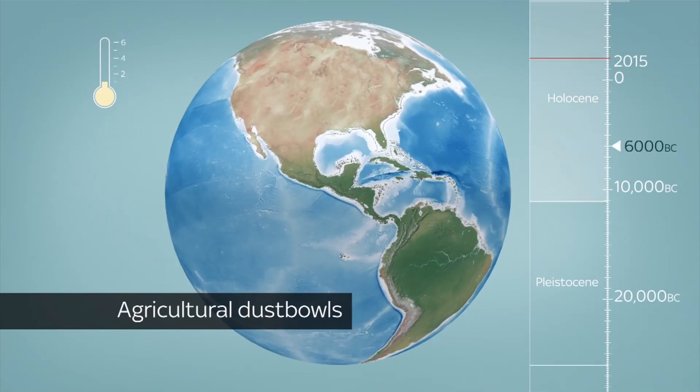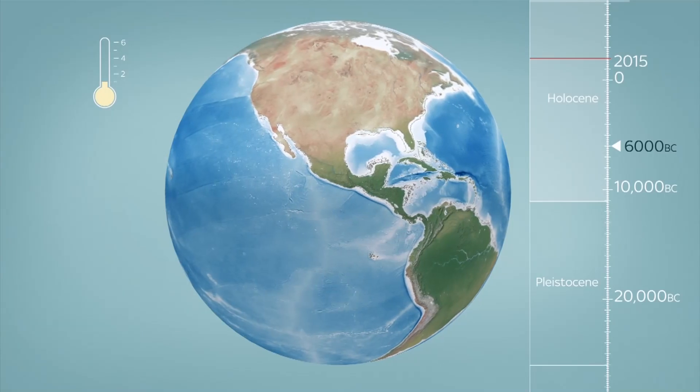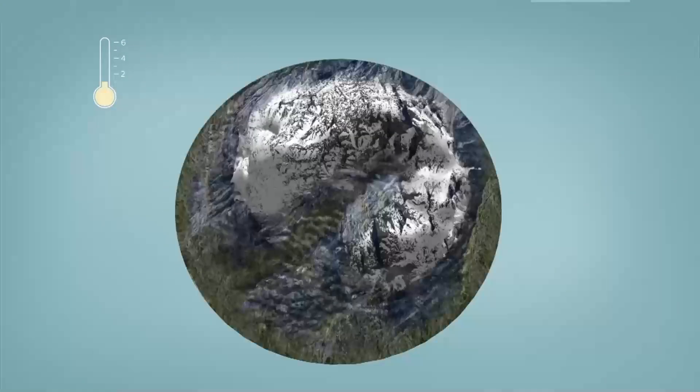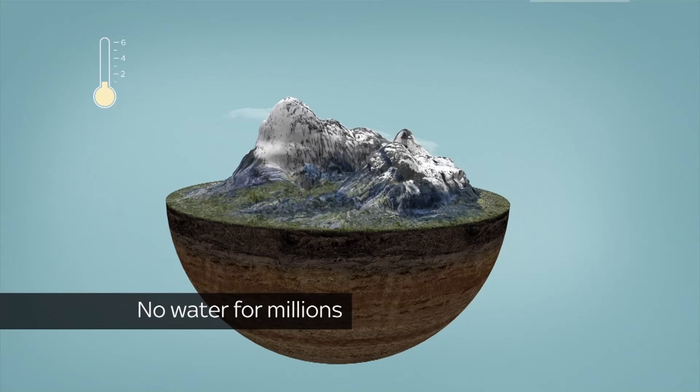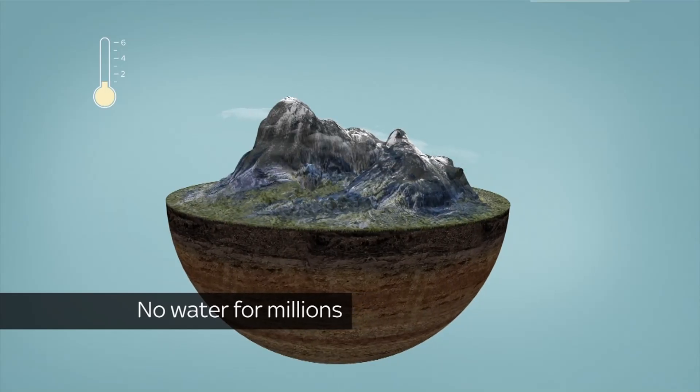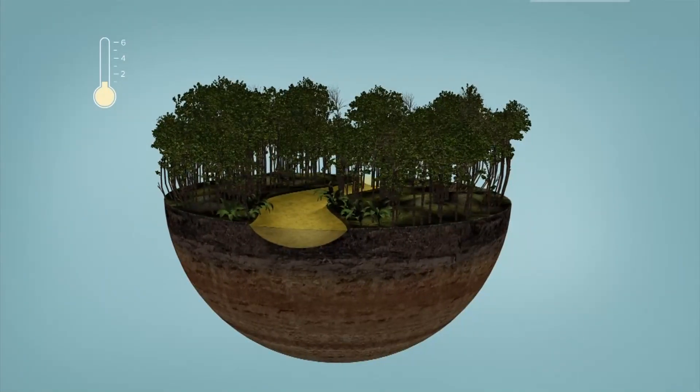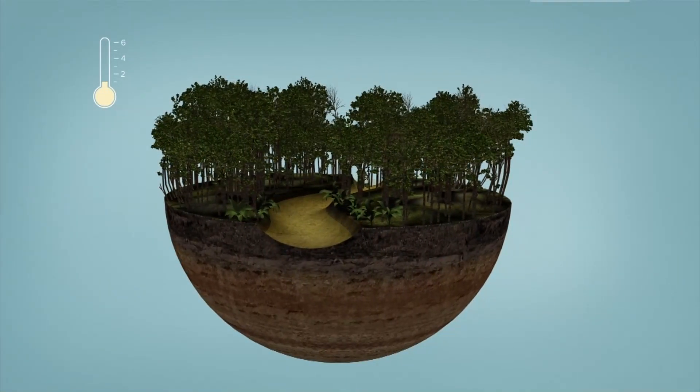6,000 years ago, temperatures were at this level and America's Midwest was a desert. In this future, mountains lose their glaciers and rivers vanish, the Indian subcontinent fighting for survival. A single degree temperature increase could eliminate fresh water from a third of the planet within 85 years.